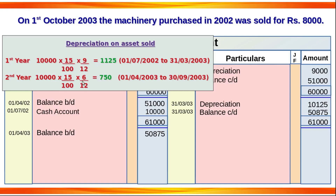In the third year, the machinery purchased in July 2002 was sold in October 2003. Depreciation is charged for six months only — from April to September — before the sale date. The months counted are April, May, June, July, August, and September, giving six months of depreciation on the cost of Rs. 10,000 at 15%.